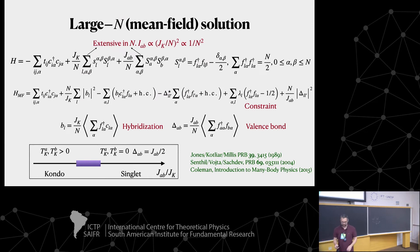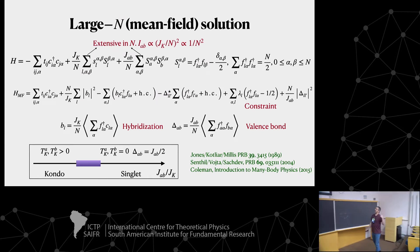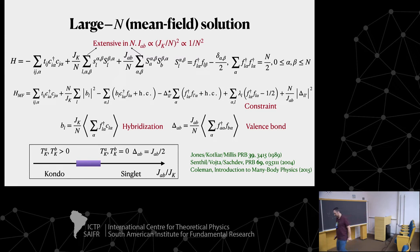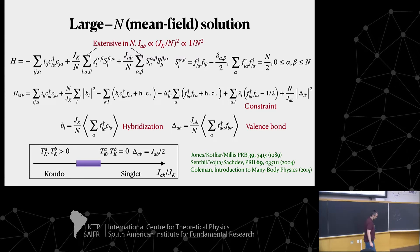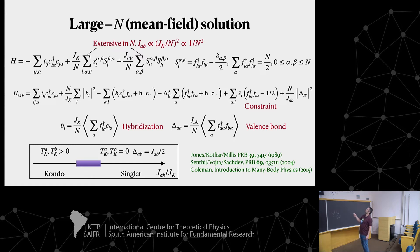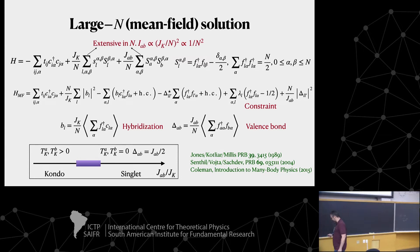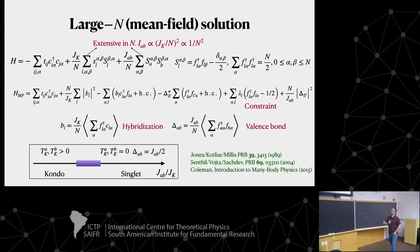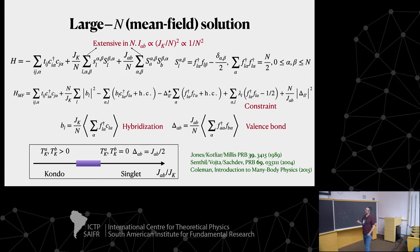To solve this problem — which has both disorder and interactions — I use what's called large-N, which is a fancy way of saying mean field theory. Instead of having just spin-up and spin-down, I increase the spin degeneracy to N. In this language I can do a mean field theory, but the mean field here is special: instead of a mean field on an order parameter, I do a mean field on the bonds — a bond operator mean field.